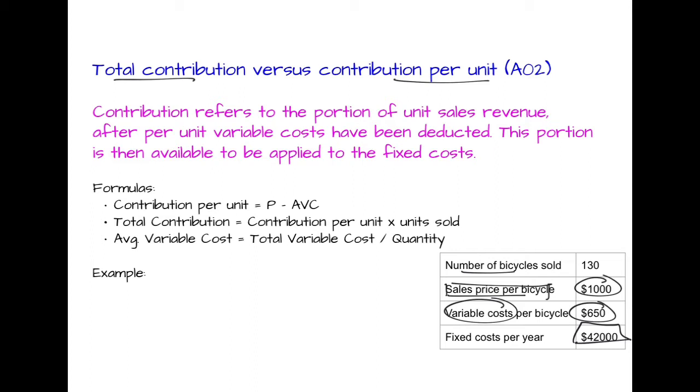And in doing this, we can make some simple calculations that basically tell us how much profit or how much contribution are we making when you only consider our variable costs. So for this, our contribution per unit, as shown here, is simply our price, that's our selling price which is $1000, minus our variable costs, our average variable costs. What we're saying here is $650. So that $1000 minus $650 comes to $350. That means if you only consider those variable costs, all the materials and whatnot that go into that bicycle, we are making $350 for every unit that we sell.